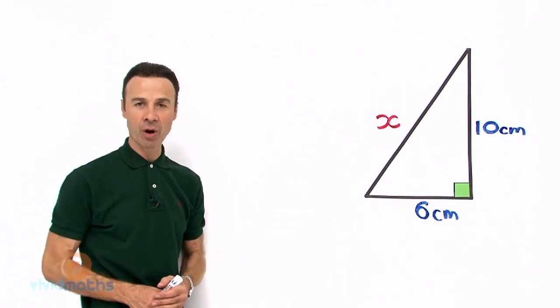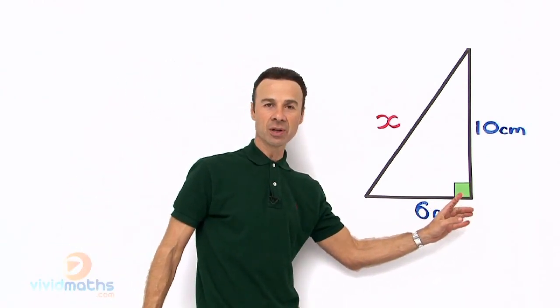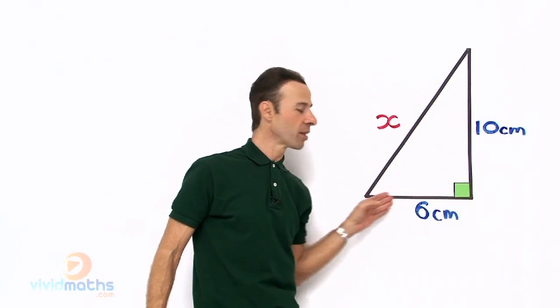Now we have here in the diagram a right angle triangle. We know it is right angle because we have this little guy here, it is 90 degrees, and we have a length here and a length there attached to it.